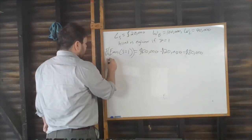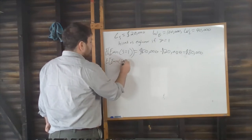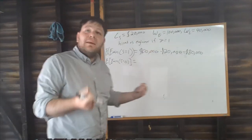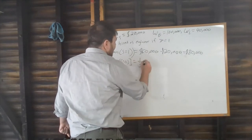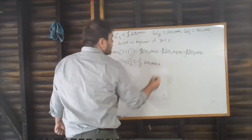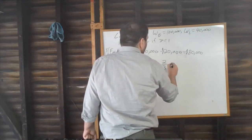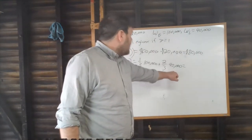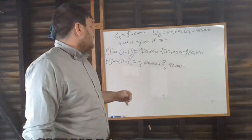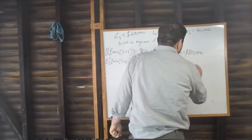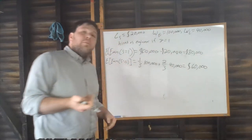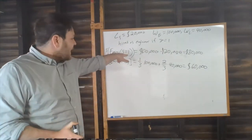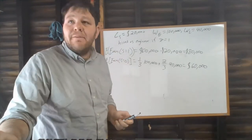If you don't study — if S=0 — your expected earnings are: one-third of the time you pass by luck and earn $100,000 as an engineer, and two-thirds of the time you don't pass and earn $40,000 as a laborer. So expected earnings without studying = (1/3)×$100,000 + (2/3)×$40,000 = $60,000. Since $80,000 > $60,000, it's in your interest to study and ensure you'll be hired as an engineer.